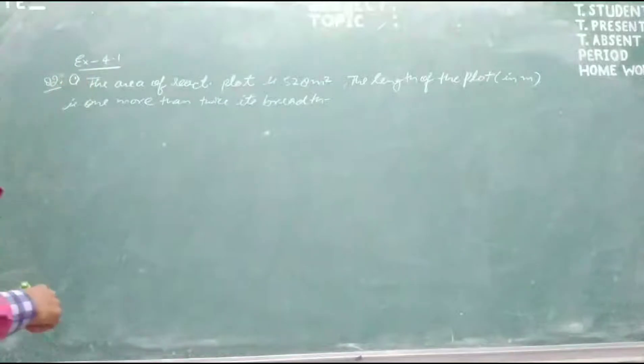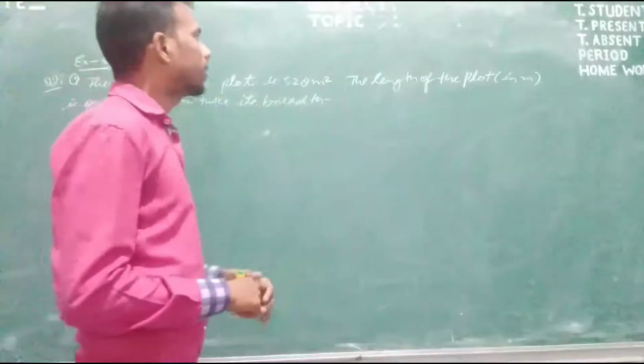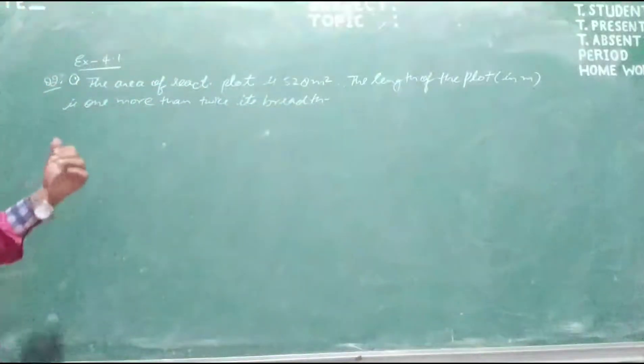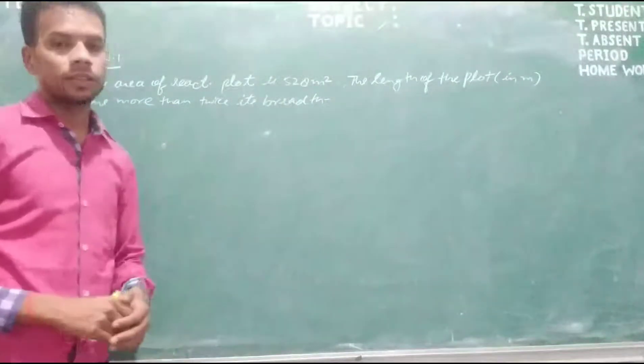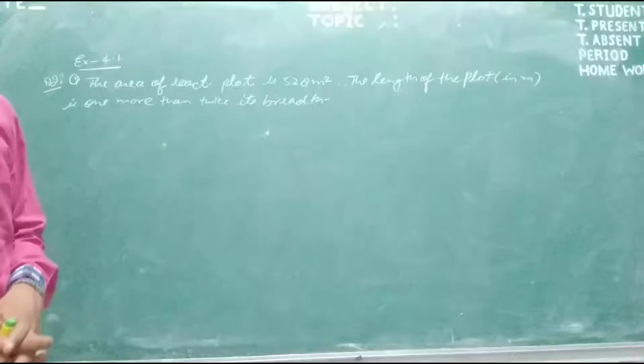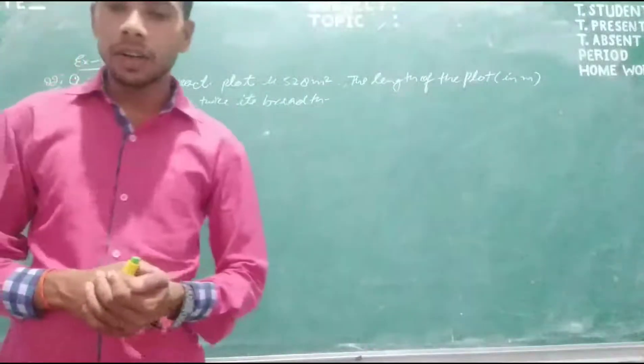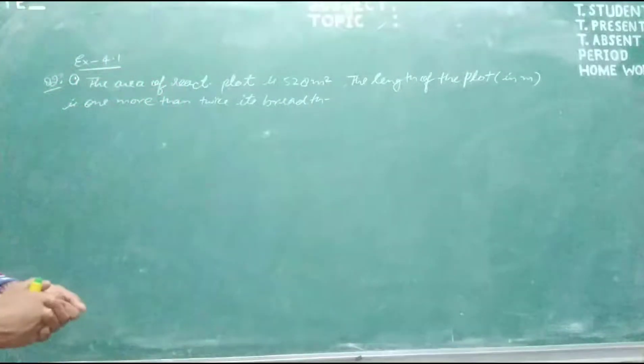Given here, the area of a rectangular plot is 528 square meters. The length of the plot in meters is one more than twice its breadth. We have to represent the following situation in the form of a quadratic equation.